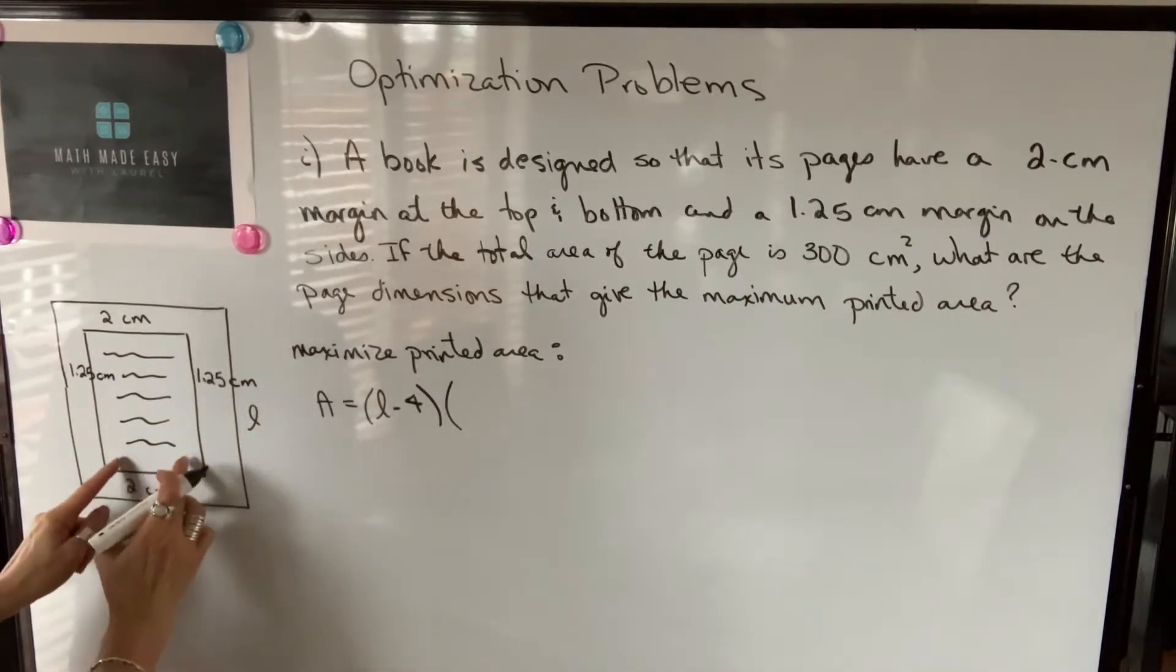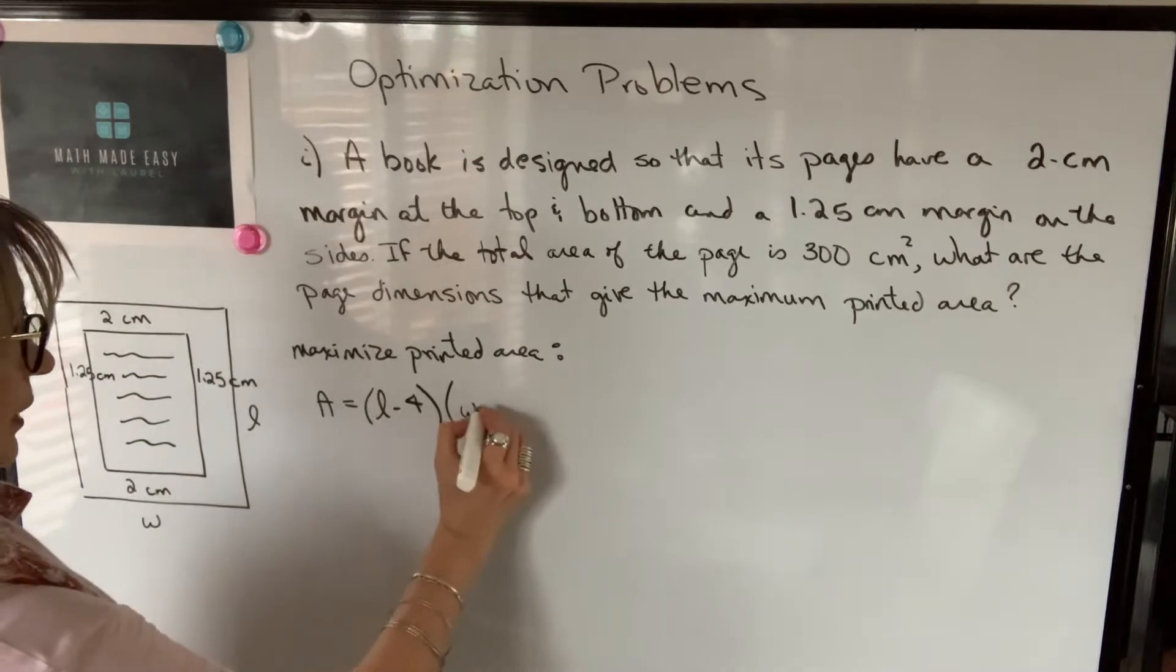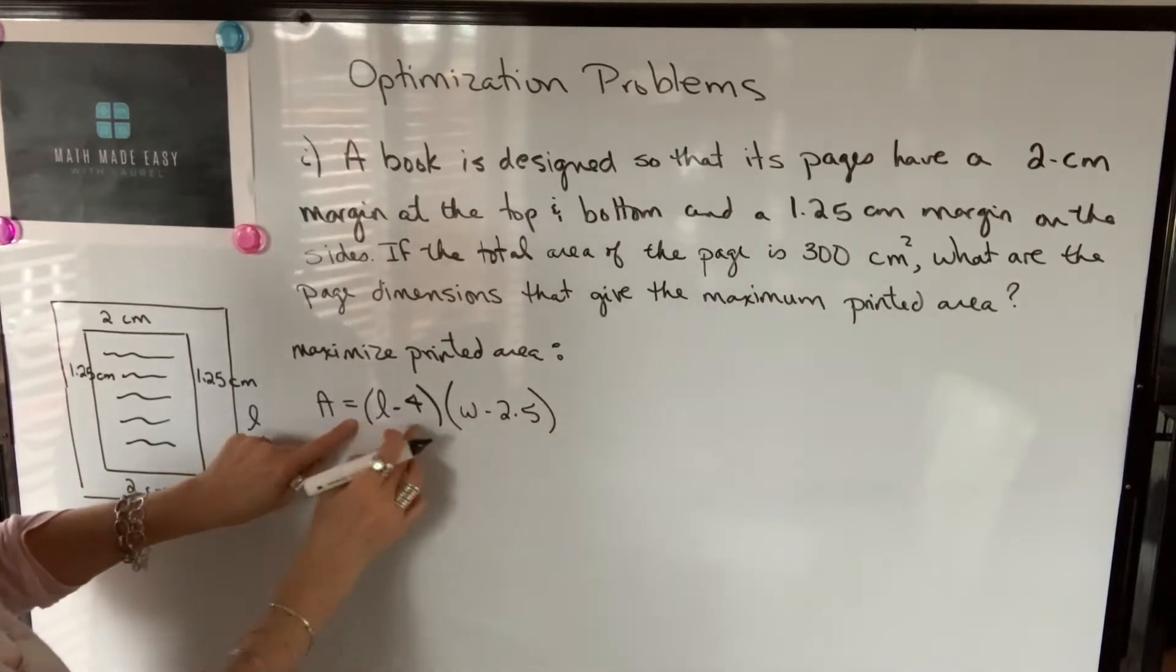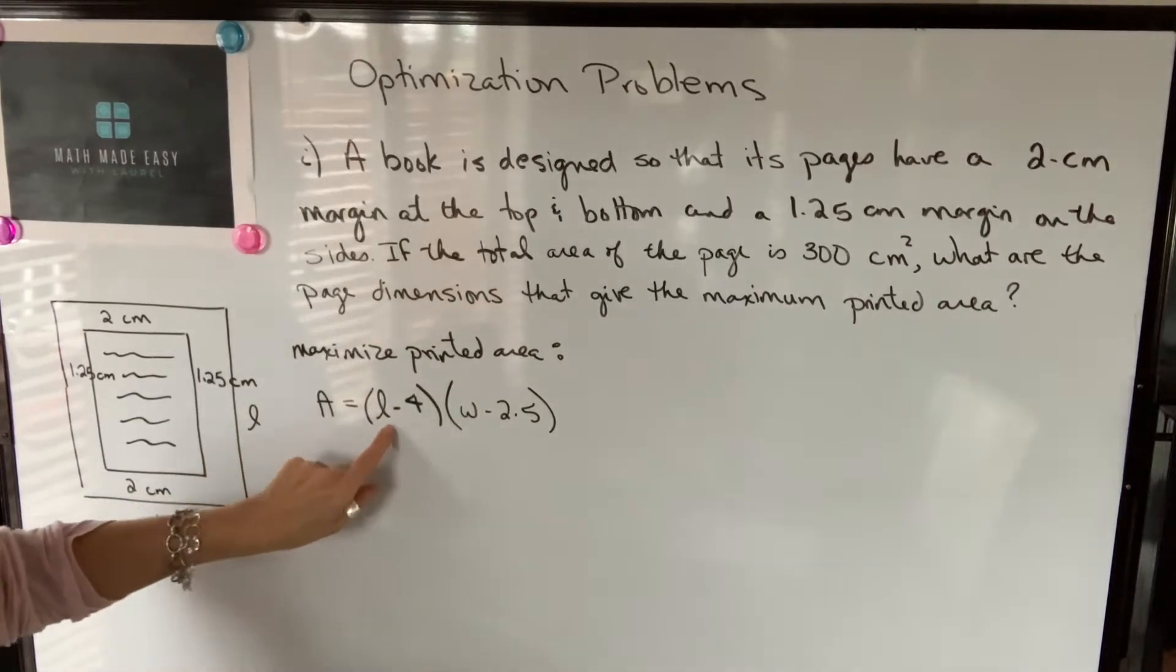Then, the width of the printed area will be W minus 1.25 minus 1.25, so it will be W minus 2.5. So you want to have the function that you're maximizing. We have two unknowns.